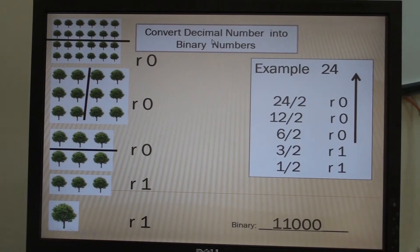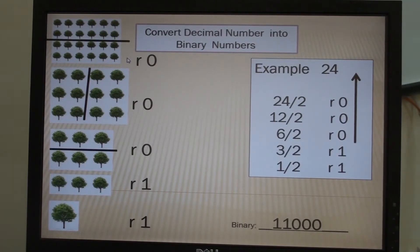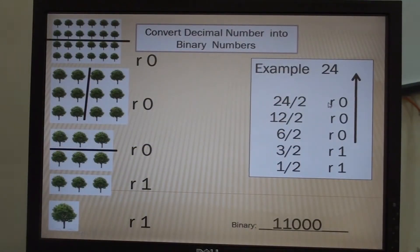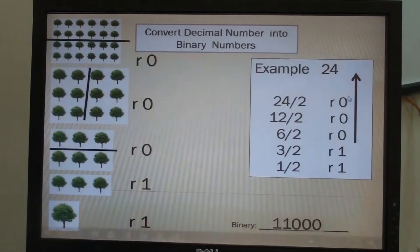Now we would like to convert the number 24. To convert decimal into binary numbers, you have to divide the numbers by two. If there is a remainder, you have to take that number — it is important to get the remainder. So 24 divided by 2 is equal to 12, but there is no remainder, so write 0.